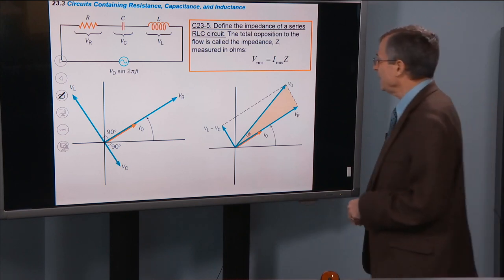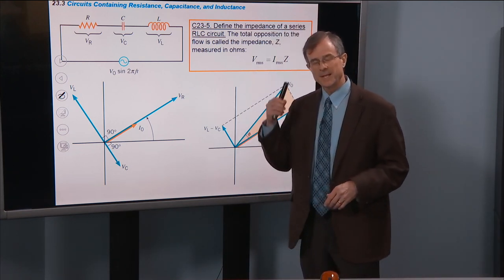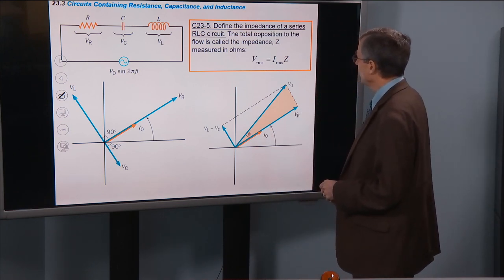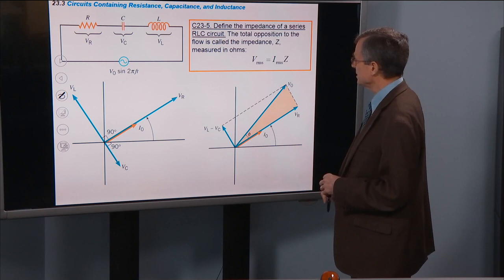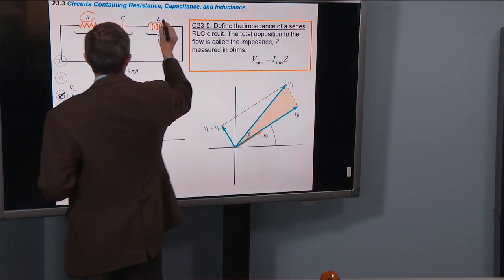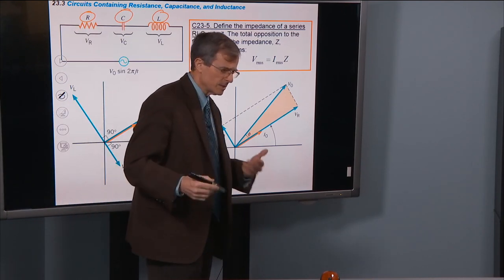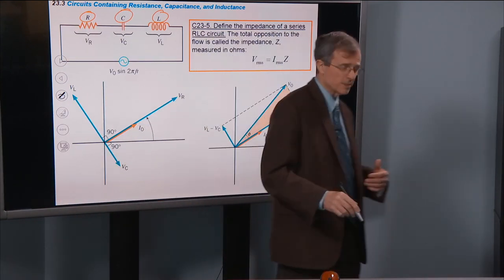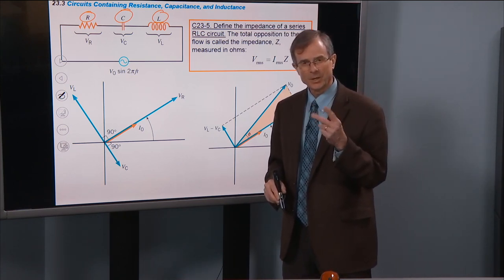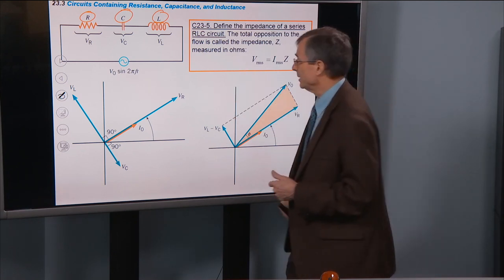Let's define impedance. In the next concept we'll actually calculate it. The total impedance of a series RLC circuit—here's my R, here's my L, and here's my C. The lab sometimes calls it an RCL circuit, or LRC circuit—whatever. You just need those three letters together: R, L, and C, all in series with each other.